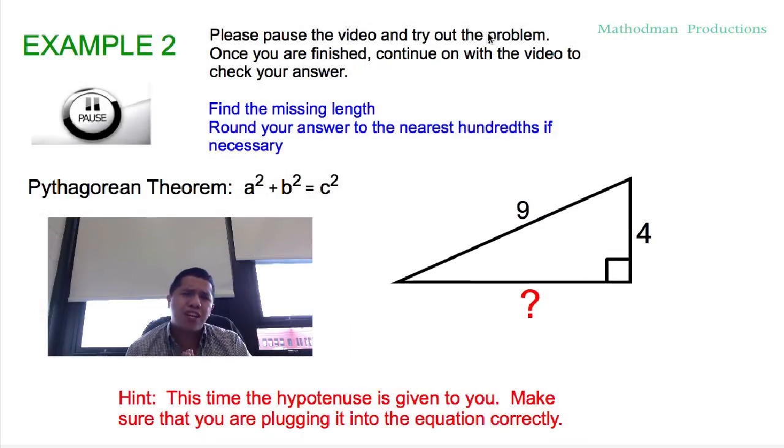So please, pause the video. Try out the example to my left, and find that missing length by using the Pythagorean theorem. When you are finished, unpause the video, and we'll go over the answer for example number two.